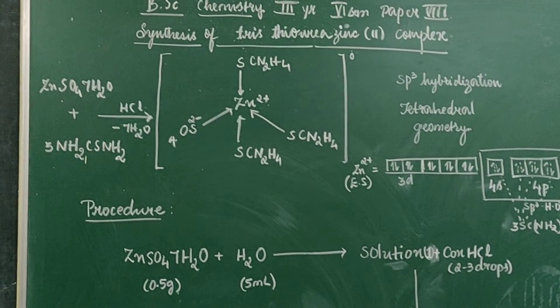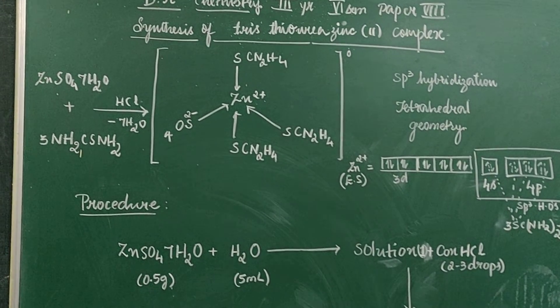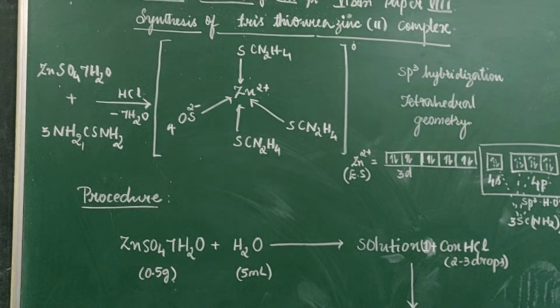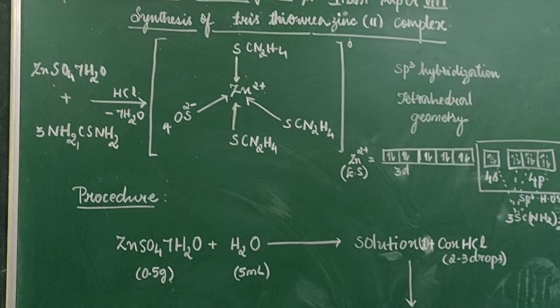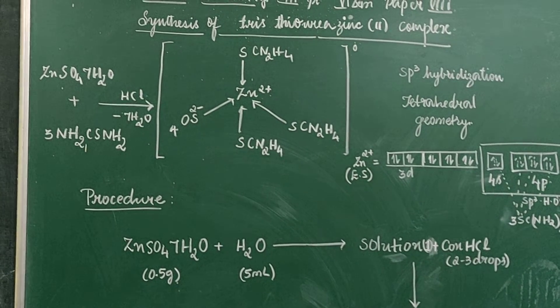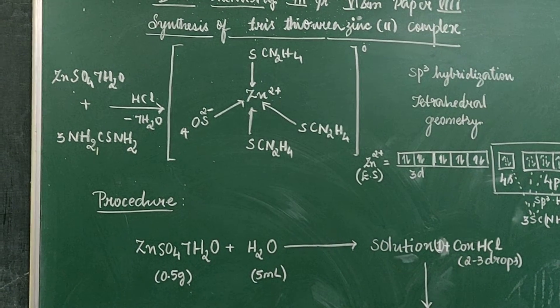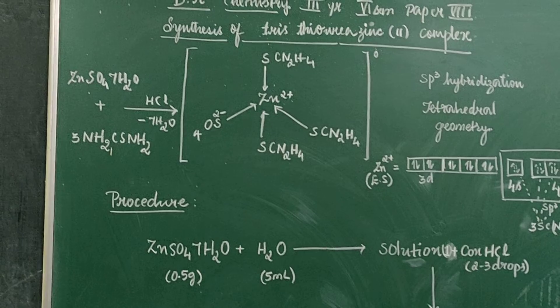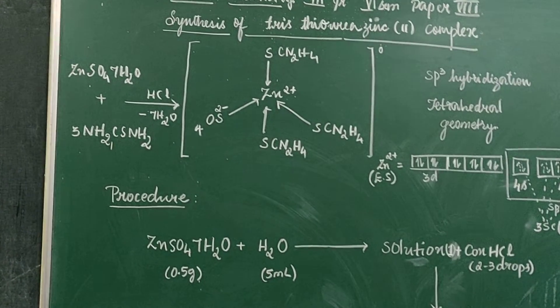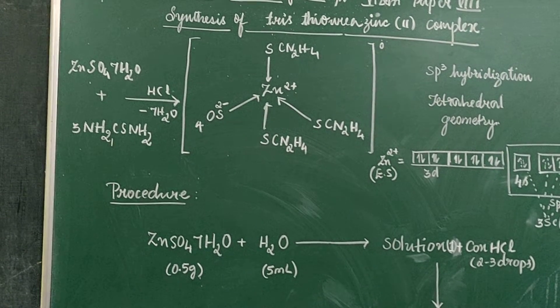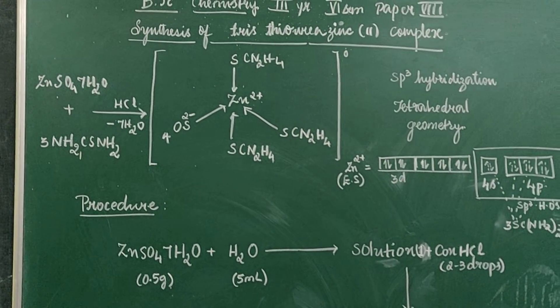we are going to add zinc sulfate heptahydrate to thiourea in presence of concentrated HCl to get a tetrahedral complex tris(thiourea) zinc(II) sulfate. It is a neutral complex because we have 3 organic ligands - they bear no charge and sulfate ions bear 2 minus charge. Zinc has 2 plus charge, so the total charge on the complex becomes 0.